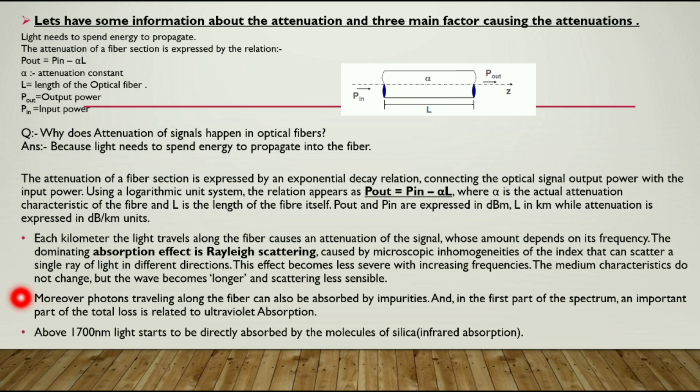Above 1700 nanometers light starts to be directly absorbed by the molecules of silica. Above 1700 nanometers light cannot be used for the DWDM system because infrared absorption increases after 1700 nanometers.